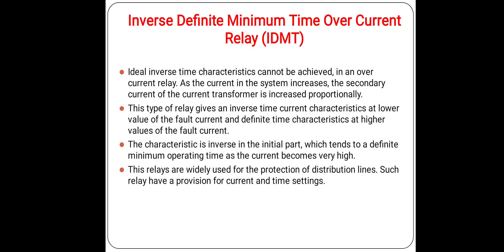IDMT relays are widely used for the protection of distribution lines and have a provision of current and time settings — PSM and TSM — which will be discussed in later slides. IDMT is important because it provides both types of characteristics: inverse time characteristics during lower fault current values, and definite time characteristics at higher values of fault current.